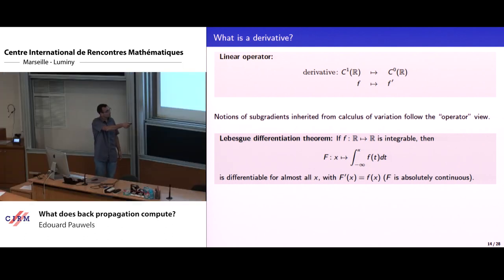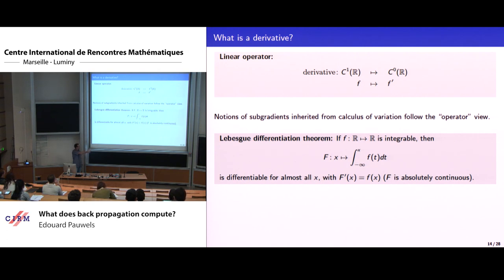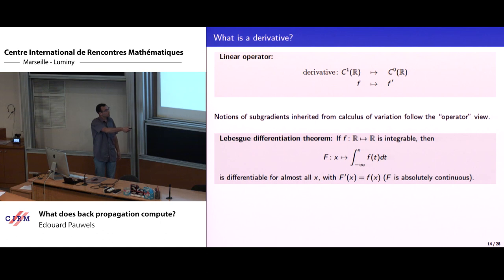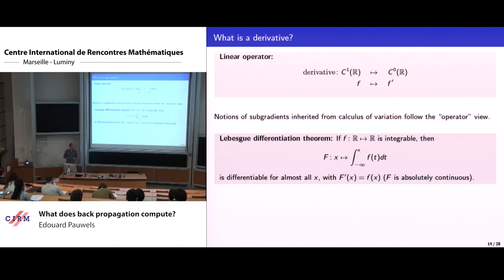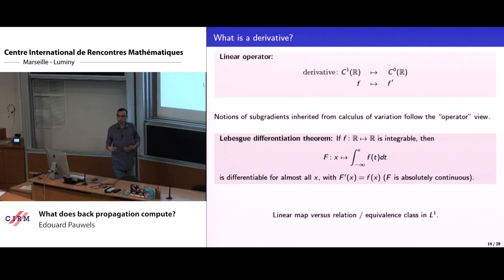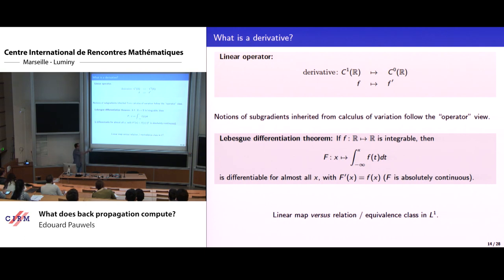If I give you a small f integrable in the Lebesgue sense, I can take big F to be one of its primitives. A famous result says F must be differentiable almost everywhere and the value of its derivative is small f almost everywhere — in this case we say F is absolutely continuous. The difference between the two views: the first is a map on functions; the second gives a relation between two objects with a whole equivalence class of potential derivatives in L1. Changing the value of small f on a set of Lebesgue measure zero doesn't change the integral, so we lose uniqueness of the derivative — but this flexibility is what helps recover the holes in calculus in the non-smooth world.